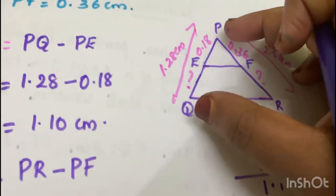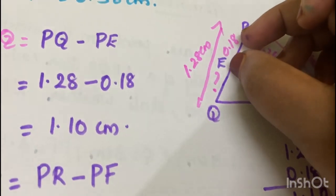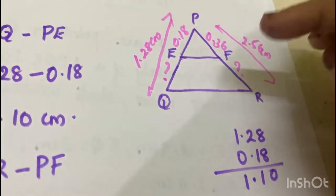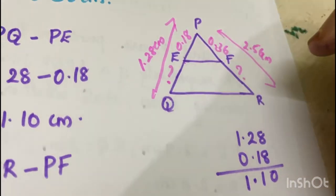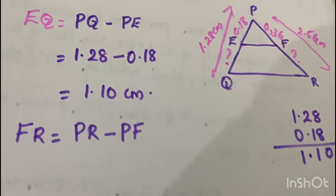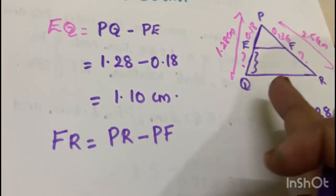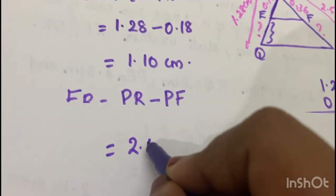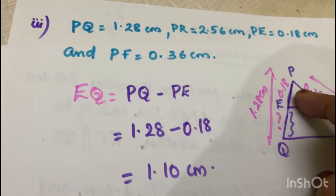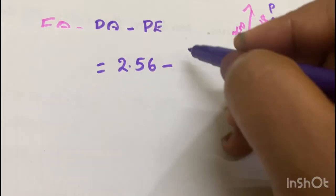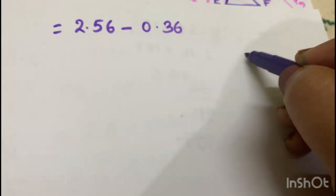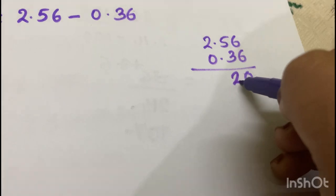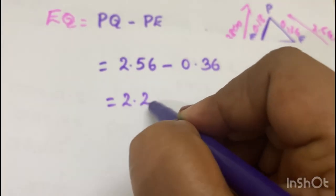FR equals 2.56 minus 0.36, which equals 2.20 cm. So now we have EQ equals 1.10 cm and FR equals 2.20 cm.